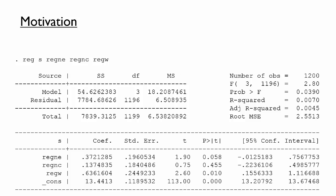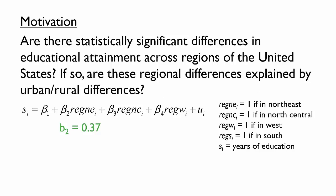As a quick refresher, try interpreting the coefficient on the Northeast region dummy variable. Referring back to the model, the Beta-2 estimate means that, on average, individuals in the Northeast attain 0.37 years of education more than individuals in the South. We compare to the South because it is the omitted category.